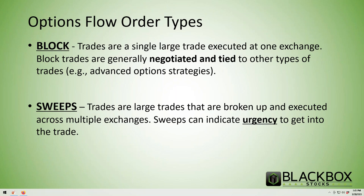In options there are two order types. A block order is like a limit order — you only want to be filled at a specific price. These are single larger trades executed at one exchange, normally pre-negotiated and potentially tied to other trade types or advanced strategies. Think about dark pool activity — sometimes blocks are tied to shares. A block is pre-negotiated; they're stubborn and do not want to get filled unless it's at their price.